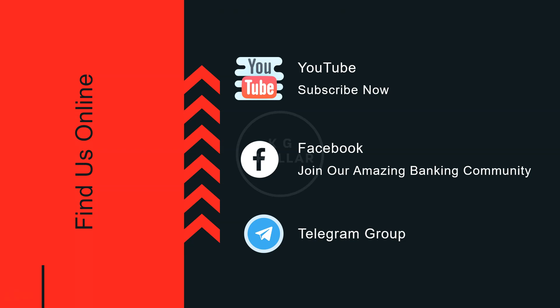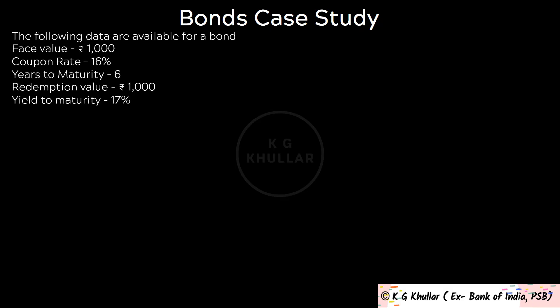The case study goes like this. The following data are available for a bond: face value is Rs.1000, coupon rate is 16%, years to maturity is 6 years, redemption value is Rs.1000, and yield to maturity is given as 17%.